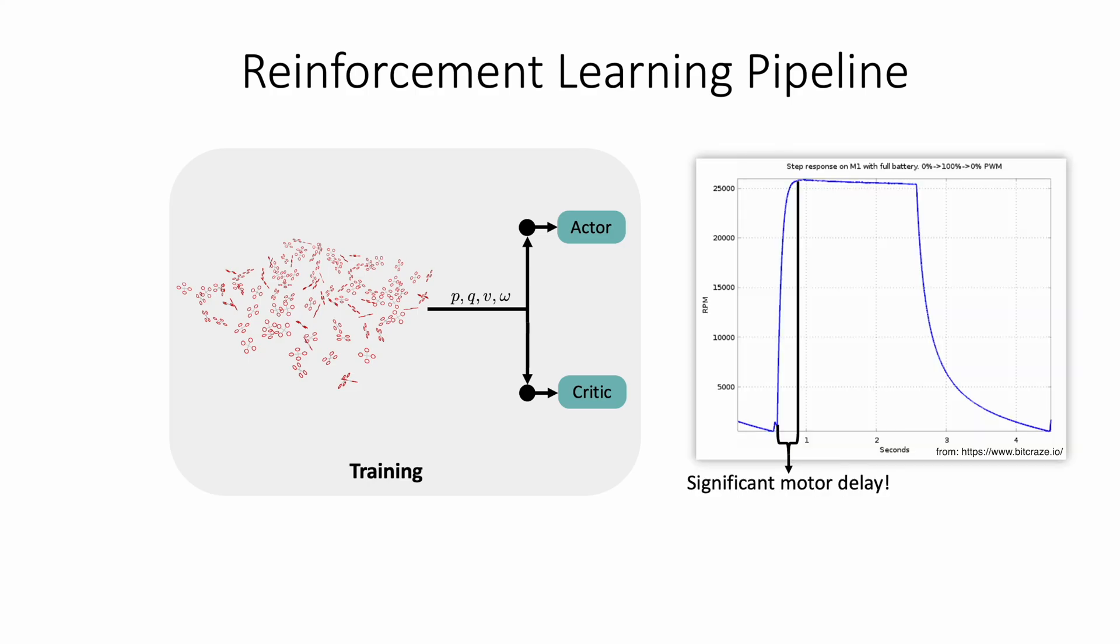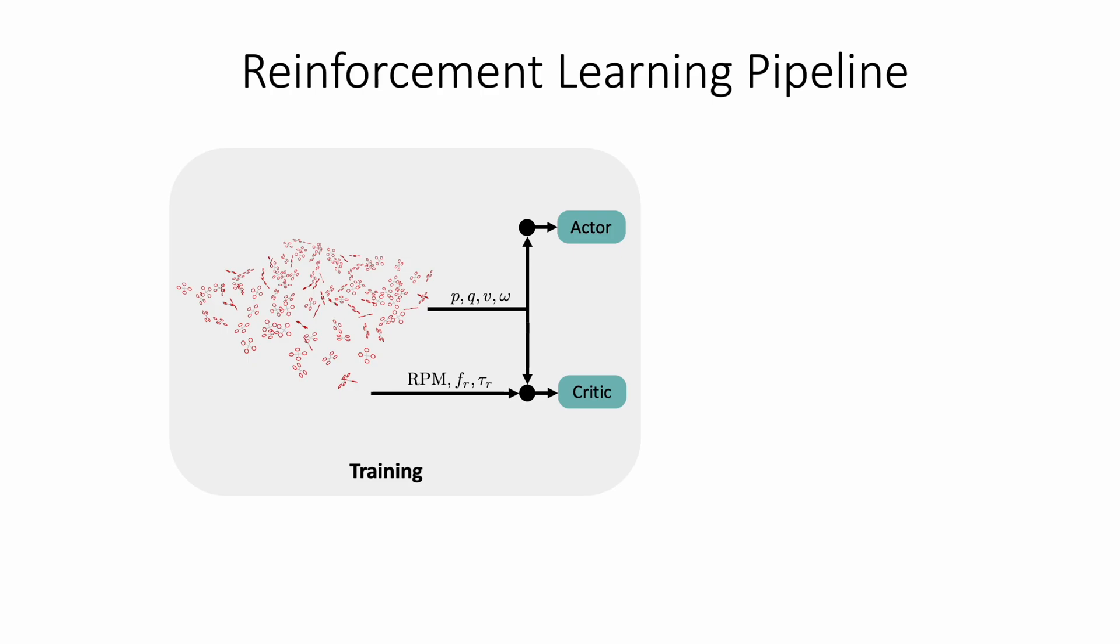A great challenge is posed by the large motor delays of our target quadrotor platform, the Crazyfly. The RPMs cannot be measured directly on the real device, hence we propose an asymmetric actor-critic scheme. Because the critic is only required during training, in simulation we can provide it with the ground-truth RPMs. To account for the partial observability, we provide the actor with an action history.